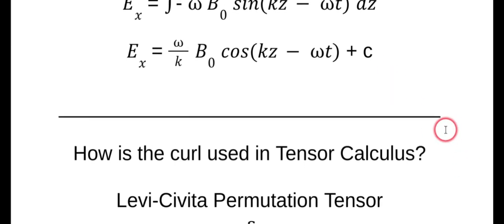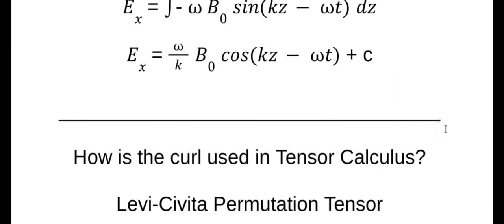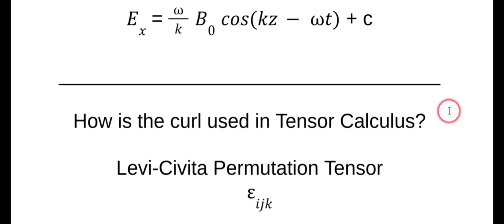How is the curl used in tensor calculus? By a clever fellow named Levi-Civita, who was a student of Ricci, the father of tensor calculus. Levi-Civita came up with the permutation tensor, which is just this little guy, epsilon ijk.